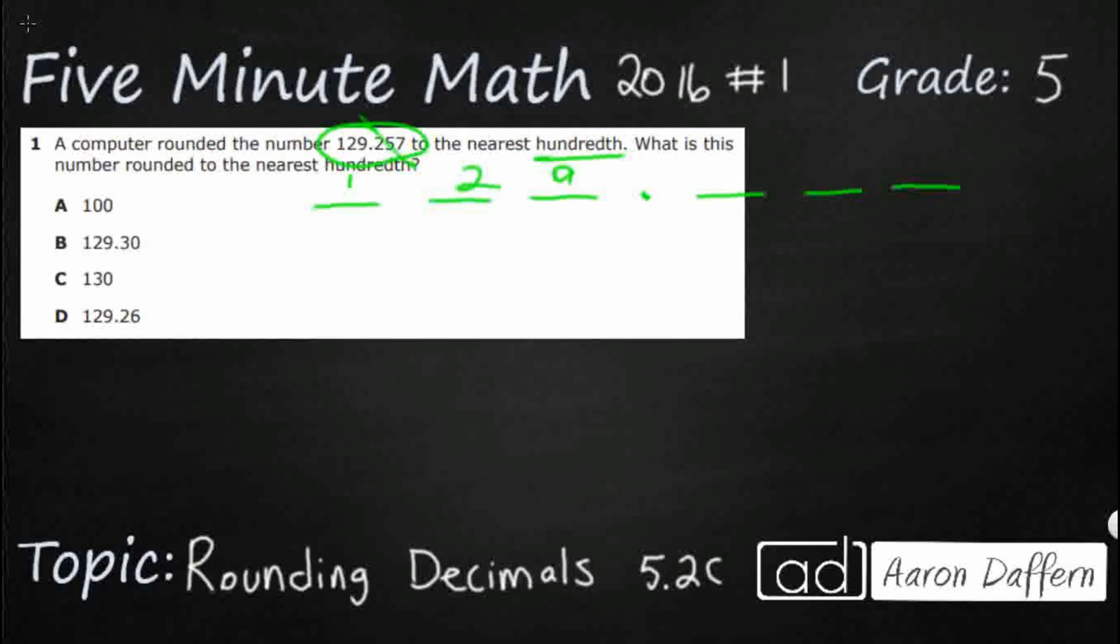129.257. Always start at your decimal point, that's your anchor, so you know where things go.